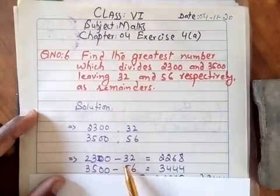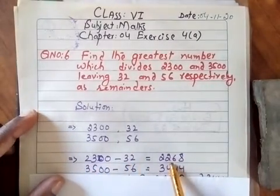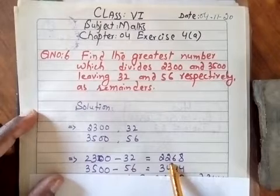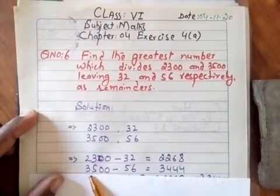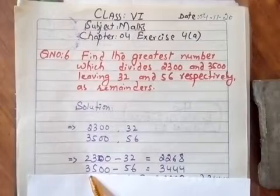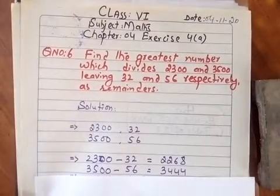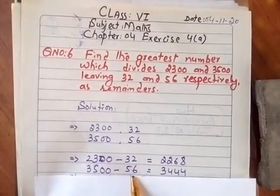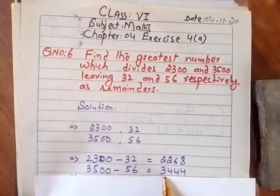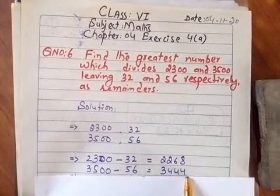When you subtract 32 from 2300, you get 2268. Then again, when you subtract 56 from 3500, you get 3444.